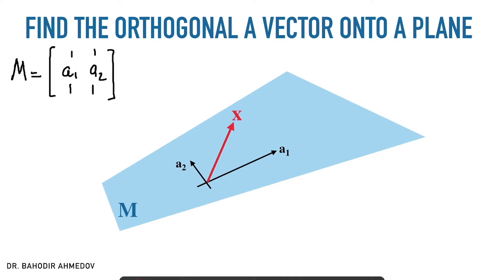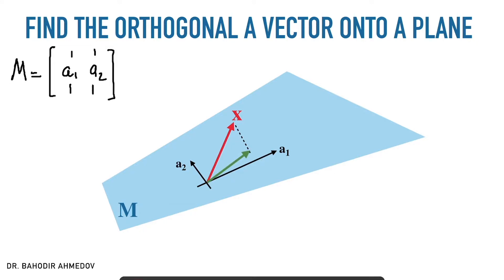Now let's say you are given some vector in the same space and you would like to find its orthogonal projection onto the plane. The orthogonal projection means that the dashed line which connects the vector and the plane is going to be orthogonal to the plane. Then you're going to draw this green vector on the plane. In order to find this green vector, we are going to use a formula where we have to do lots of calculations with the matrices.